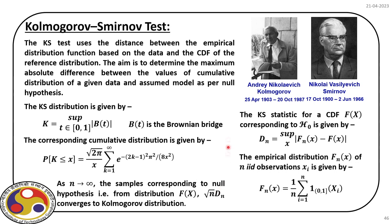The statistic Dₙ is the absolute maximum difference between two things: Fₙ(x), the empirical distribution from the data, and F(x), the CDF from the null hypothesis. For every observation, we find the absolute distance between these two quantities. For n iid observations xᵢ, the empirical distribution Fₙ(x) is evaluated using the indicator function I₁, which is either 1 or 0 depending on the condition.